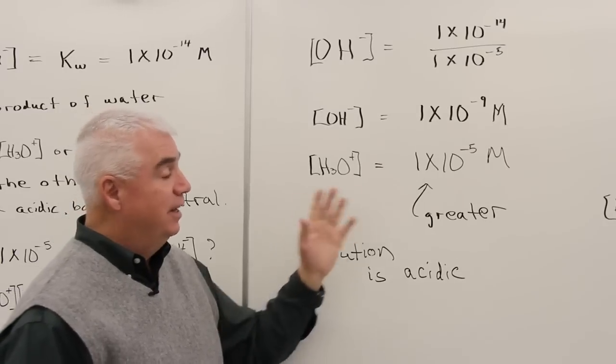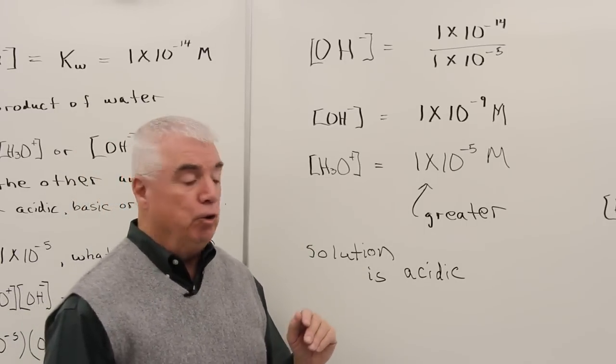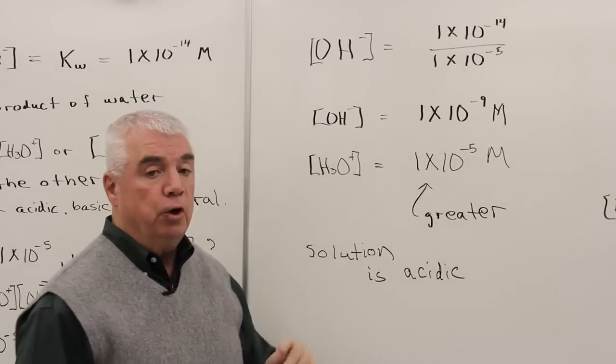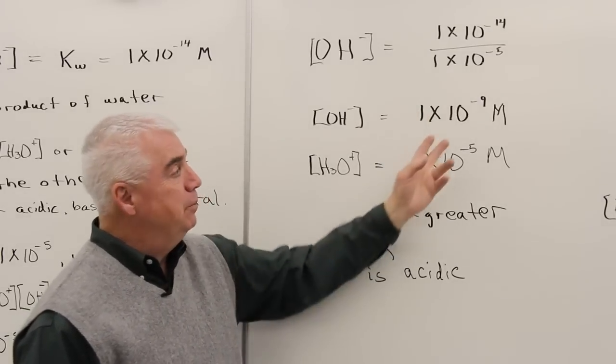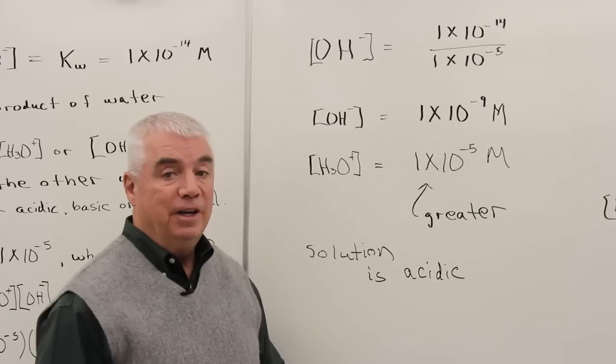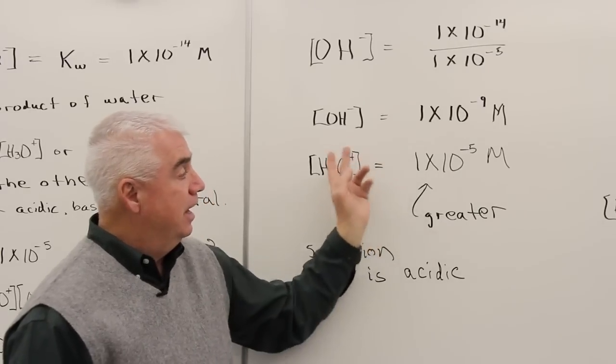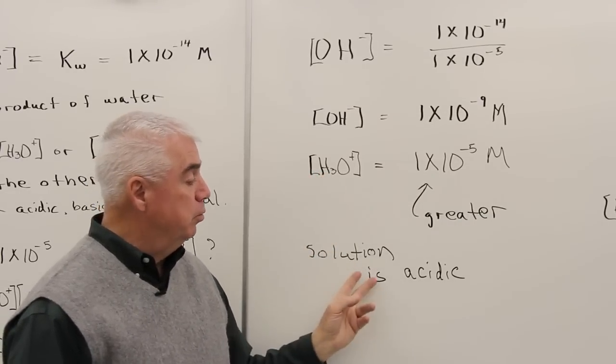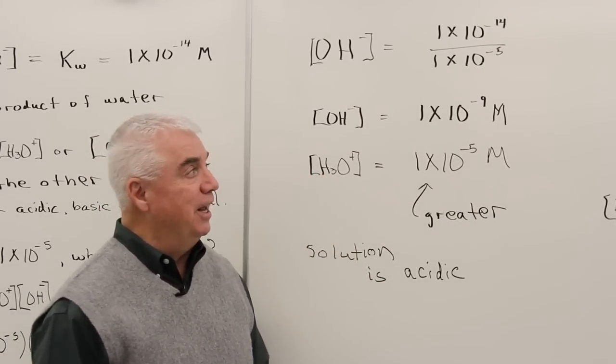And now the final question: is it an acidic, basic, or neutral solution? We'd ask ourselves, which of these two terms is the greater? And because it's a negative exponent, it's actually the smaller number, the 5, that represents the greater component. So the acidic component wins out, the solution is acidic.